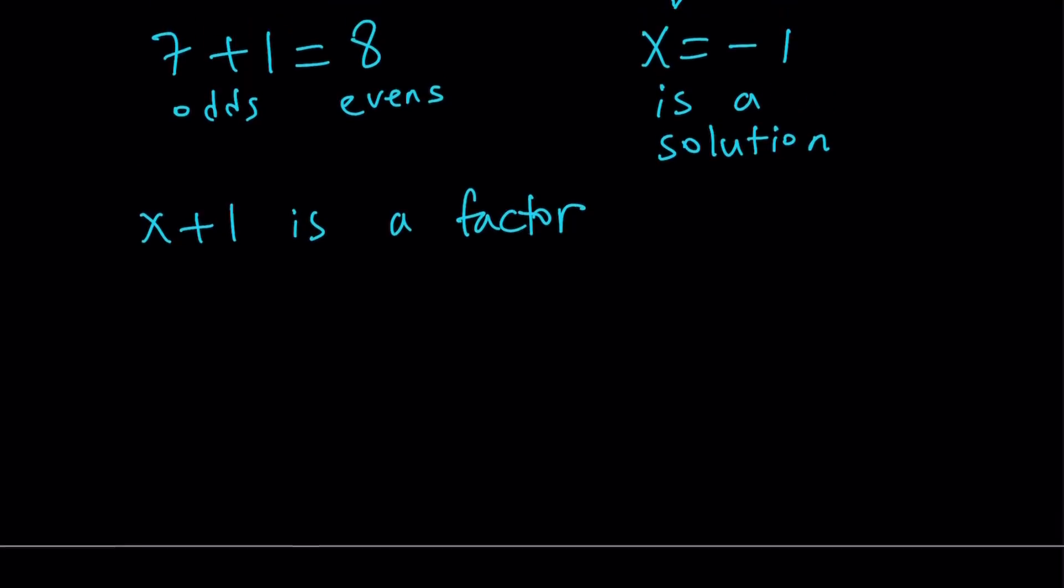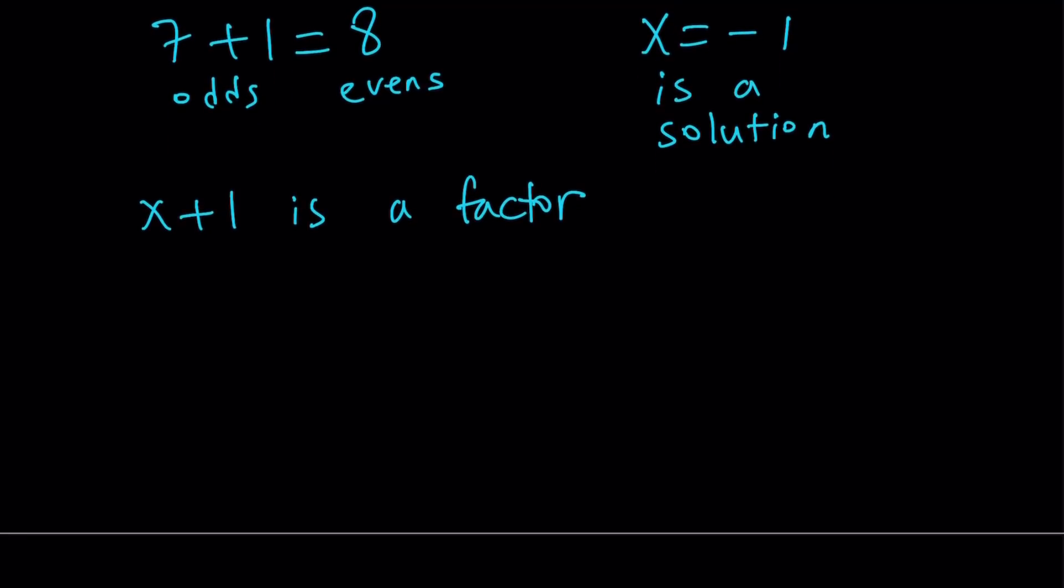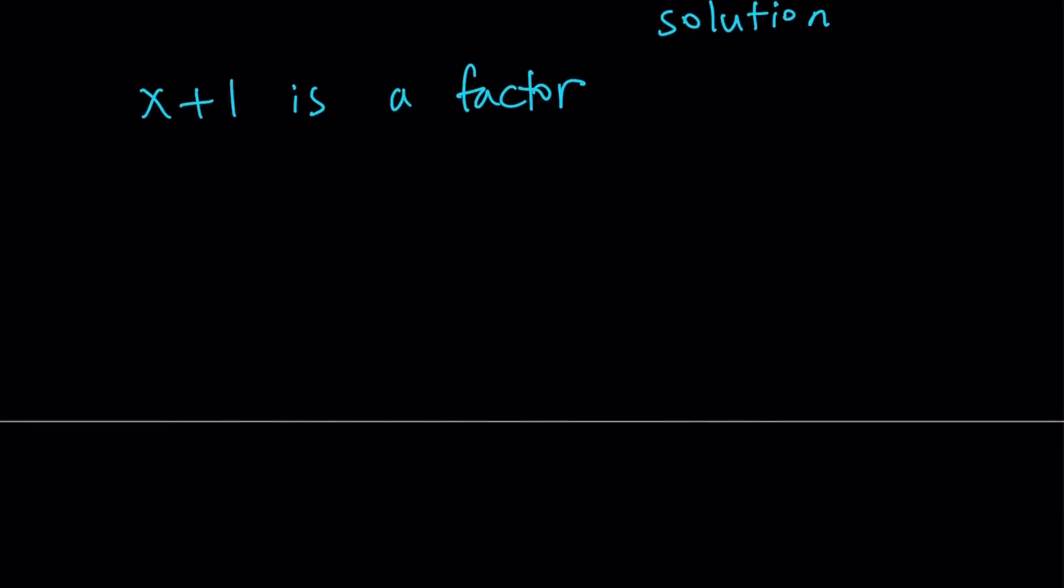Since x plus 1 is a factor, we can go ahead and factor this equation. Let's go ahead and do that by manipulating the coefficients and terms. So I'm going to start off with 7x to the 5th power. I probably need more room. Let's start here. And then I'm going to add 7x to the 4th power so that I can take out x plus 1 as a common factor, right? Okay.